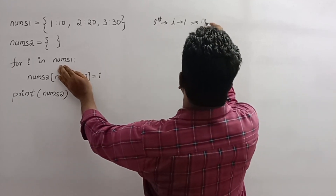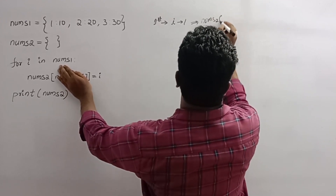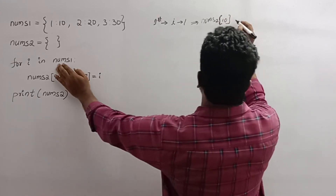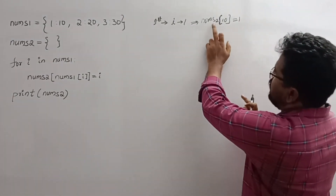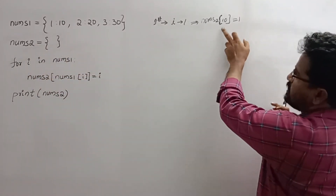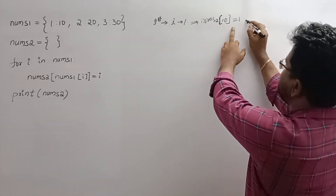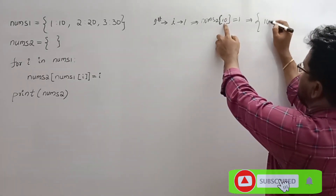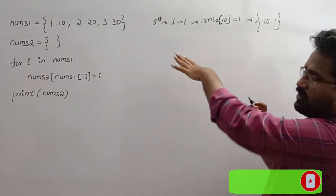Replace by 10 means nums2[10] equals i, which is 1. So nums2[10] = 1. That means in the nums2 dictionary, which is an empty dictionary, this will be added as a key and value. At the end of the first iteration, the nums2 dictionary will have 10 as the key and 1 as the value.